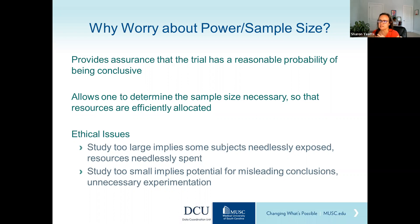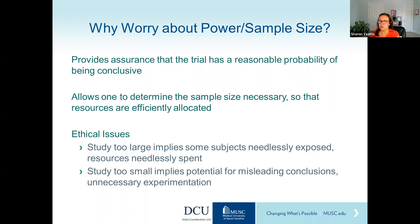This notion that we can find the exact sample size necessary to allocate resources efficiently has ethical implications that are incredibly important, but we don't necessarily think about when designing studies, especially in the early phase space. If we size a study too large, with more subjects than we need, we're exposing people to potential risk when we could already know the answer, and taking money away from other questions. If we don't size the study large enough, we have the potential for misleading conclusions — we may not actually be able to answer the question we're trying to answer, and we're needlessly exposing participants to risk because there won't be a gain to the scientific community.